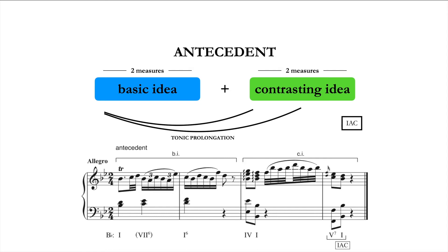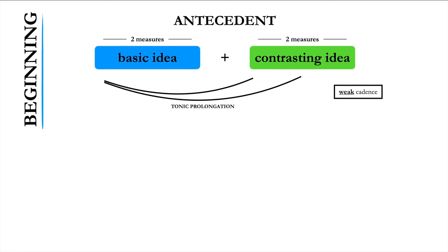So how does this phrase function within a larger theme? In a period form, an antecedent serves as a beginning, which is followed by a complementary ending phrase called a consequent.